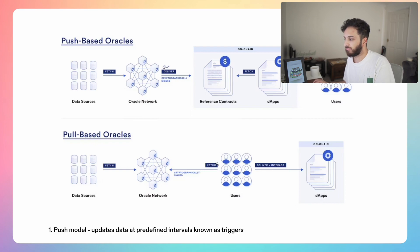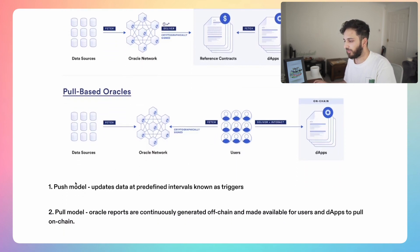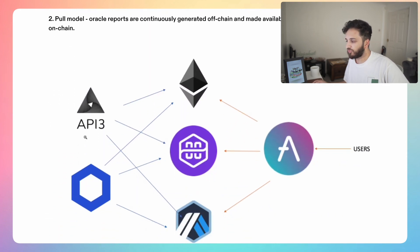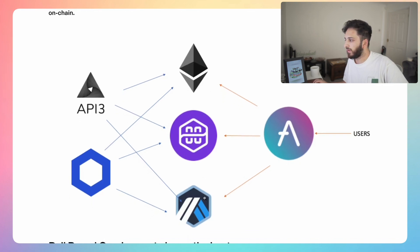With the push model, updates to data are at predefined intervals known as triggers. Whereas with the pull model, oracle reports are continuously generated off-chain but made available for users and dApps to pull on-chain when required. API3 and Chainlink currently offer the push model — they publish their data directly to blockchains, whether it's Ethereum, Polygon, ZK EVM, or Arbitrum. Apps like Aave can then interact with these smart contracts and use them within the app so users can use Aave.